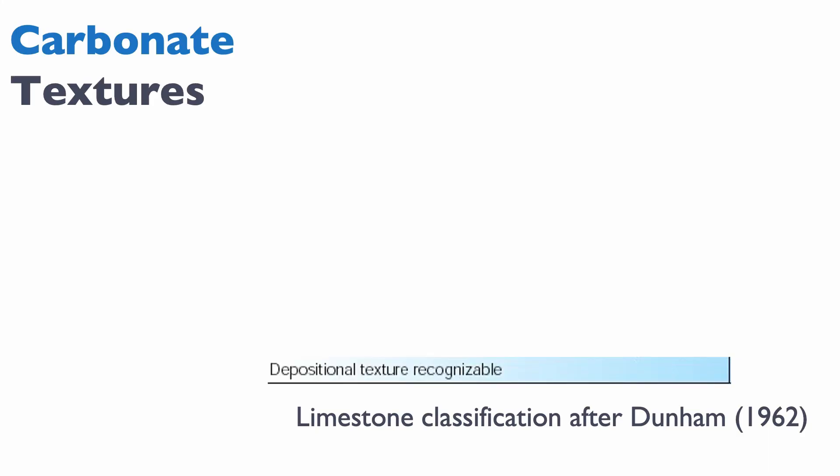The first step in the Dunham texture is to determine whether or not the depositional texture is still recognizable, and that's a really key concept in Dunham — we use the depositional texture. Most of the rocks you will see will have experienced some degree of diagenesis: dissolution, re-precipitation. You need to be able to strip that out from the rock and go back to how the rock was deposited.